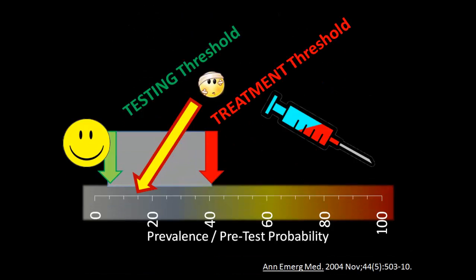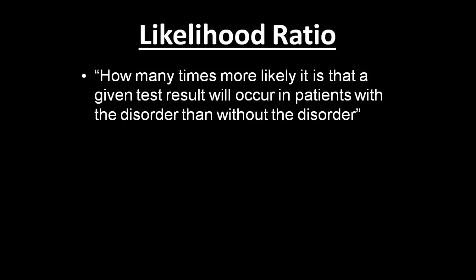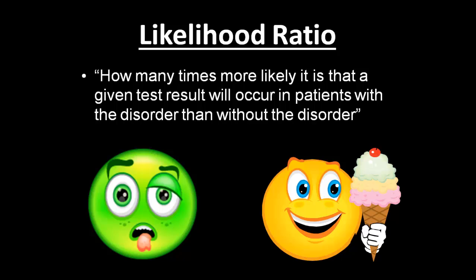Another way to put that is we don't know if these tests will give us a high enough probability that we would go ahead and treat, or a low enough probability that we'd send the patient home. This introduces the concept of likelihood ratios. A likelihood ratio, put the most simple way, is how many times more likely is it that a given test result will occur in patients with the disorder than without the disorder. If a patient is sick, what are the chances they have a positive test, divided by if a patient isn't sick, what are the chances they have a positive test. This can also work with negative tests.